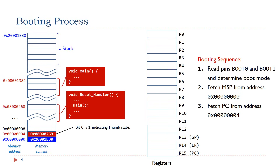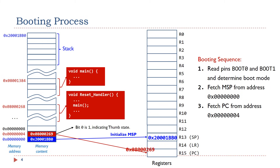After the processor determines the boot mode by reading pin boot 0 and pin boot 1, the processor copies the first word to the stack pointer register, SP. Then, the processor copies the second word to the program counter register, PC.